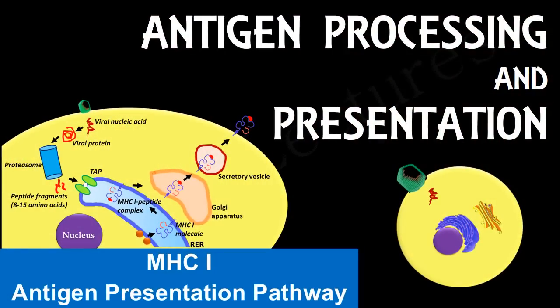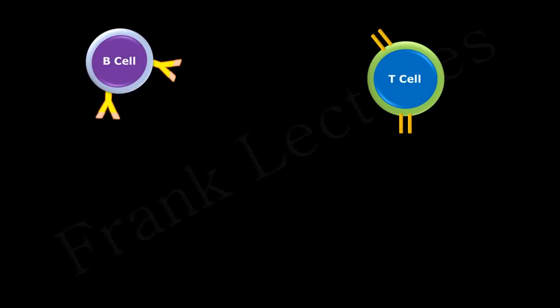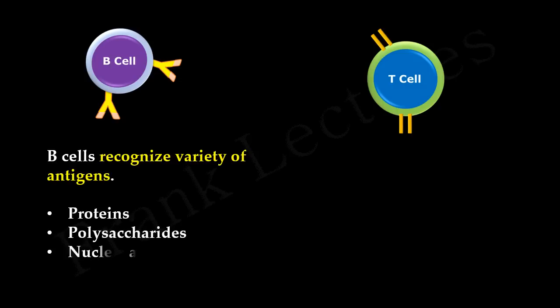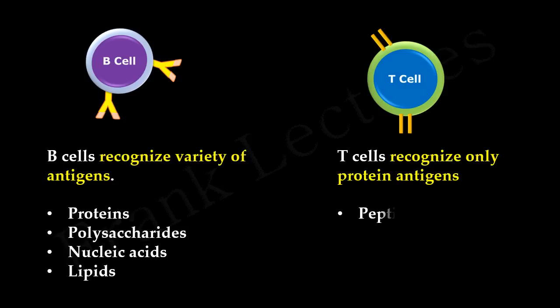Before studying antigen processing and presentation, we need to recall what we have studied till now. B cells and T cells recognize different types of antigens. B cells can recognize a variety of macromolecules such as proteins, polysaccharides, nucleic acids, and lipids. But T cells can recognize only protein antigens in the form of peptides. Another condition is that these peptide fragments must be presented to T cells in the form of an MHC-peptide complex.